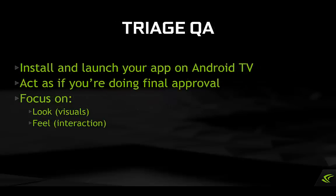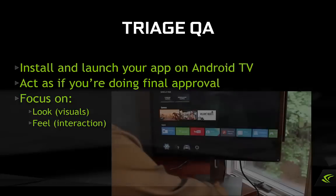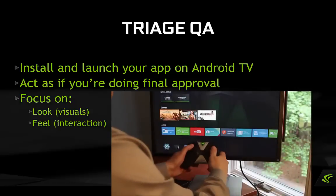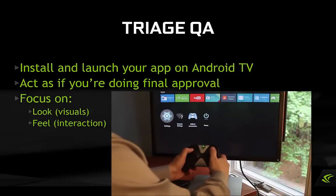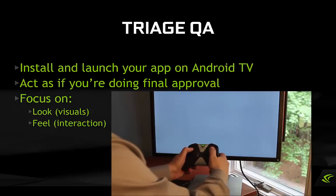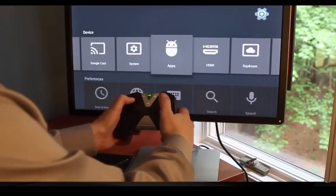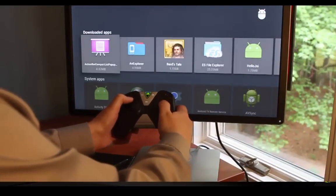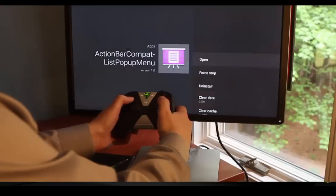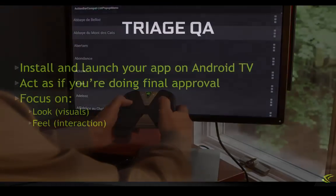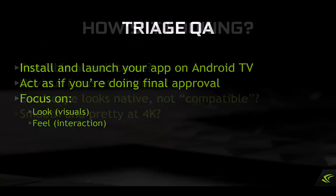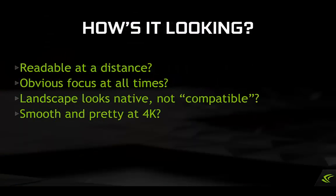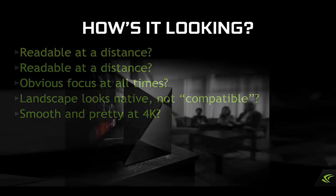The first step is simple: connect a controller or remote to your system, run your app, and begin testing on a TV. To start with, you'll be considering look and feel. Let's start by talking about the look — the visuals and assets. There are several aspects to this.